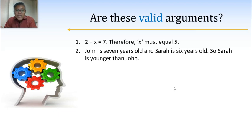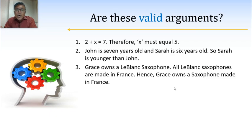How about this: John is 7 years old and Sarah is 6 years old, so Sarah is younger than John. The premises are John is 7 and Sarah is 6. If those are true, it has to be true that Sarah is younger than John — that's just the definition of what it means to be younger. So this is a valid deductive argument. Next: Grace owns a LeBlanc saxophone; all LeBlanc saxophones are made in France; hence Grace owns a saxophone made in France. If Grace owns a LeBlanc and all LeBlancs are made in France, then the one she has must have been made in France. Another valid deductive argument.